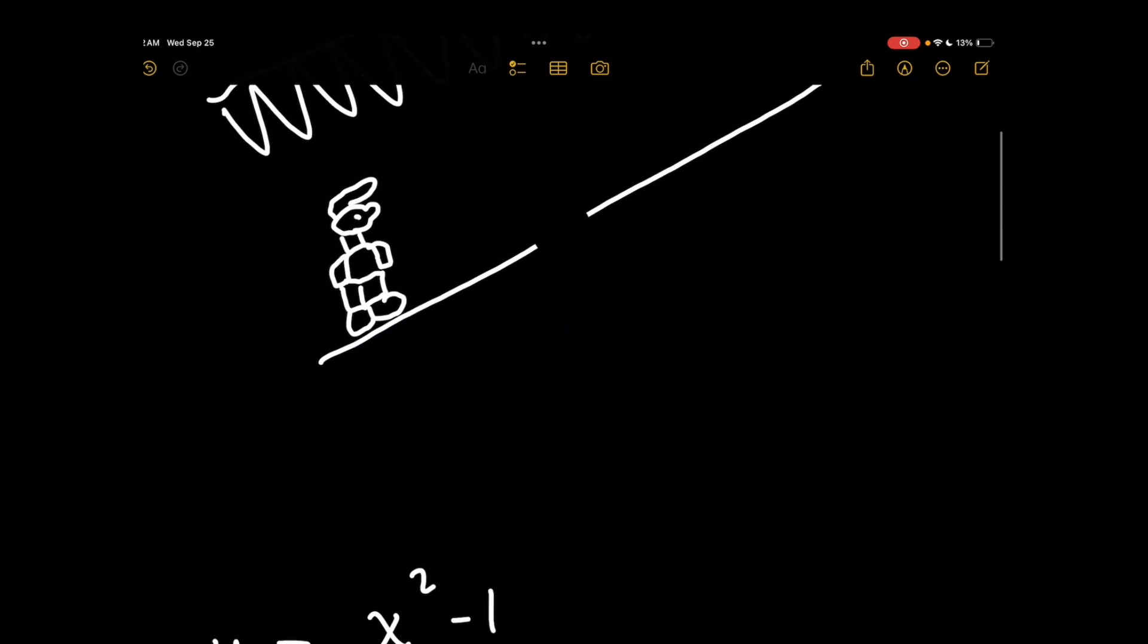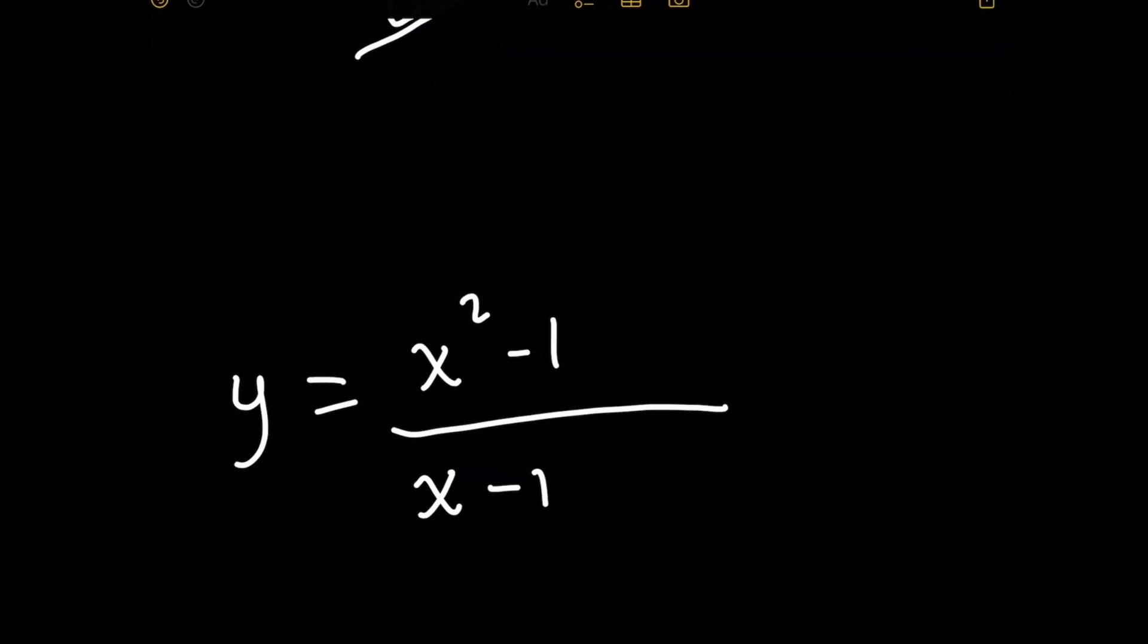So the equation she gave him for the line he's running on is y equals x squared minus 1 all over x minus 1. And if you don't believe me that this is the equation of the line above, stick around, you'll see.